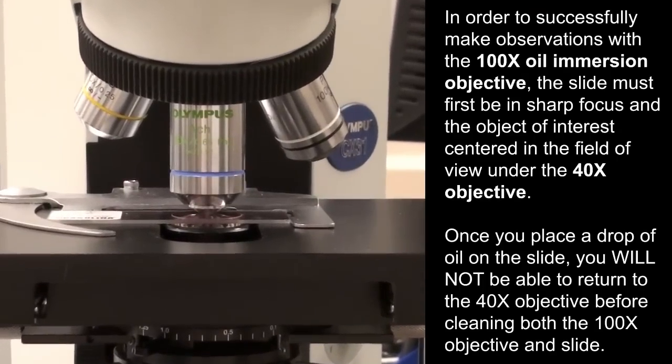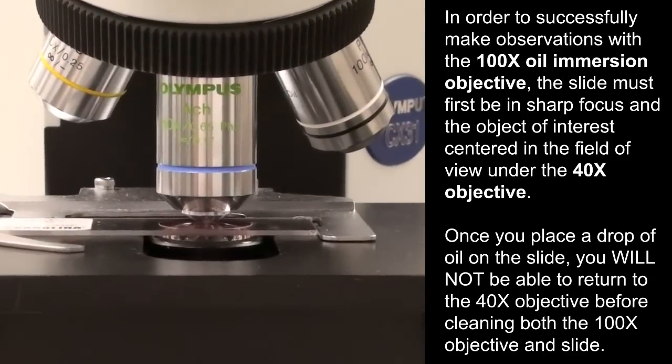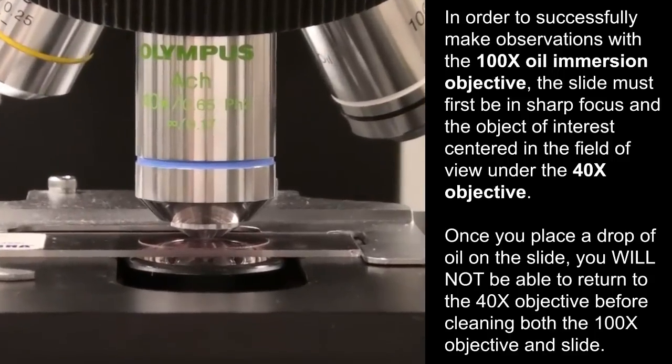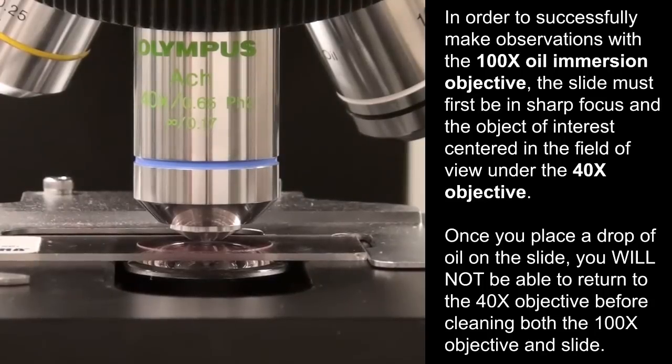In order to successfully make observations with the 100x oil immersion objective, the slide must first be in sharp focus and the object of interest centered in the field of view under the 40x.